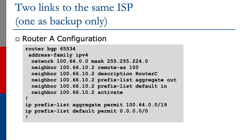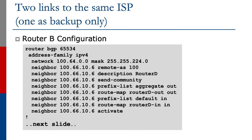For router A, the customer router in AS65534, a prefix list ensures only the aggregate is announced and the default route is accepted from the upstream. On router B, the same aggregate is announced outbound and the default route is accepted inbound, but additionally a route map router-D-out is set on the outbound direction. There is also a route map on the inbound direction, which we'll look at next.